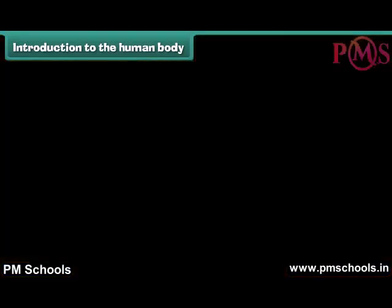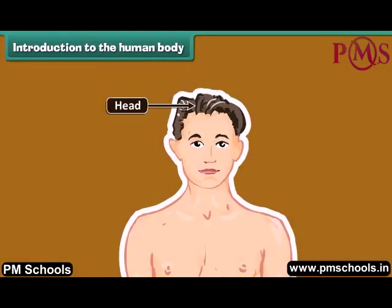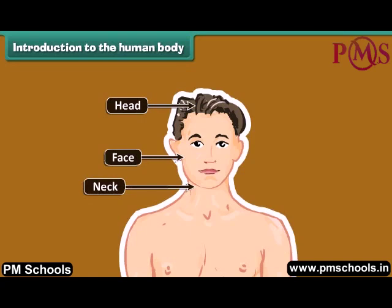As we can see here, head is the uppermost part of the body and we find hair present on the head. Next body part is our face. The face has eyes, nose, tongue and ears. Below the face is the neck which joins the head to the rest of the body. It helps the head move towards right and left and up and down. It is cylindrical in shape.